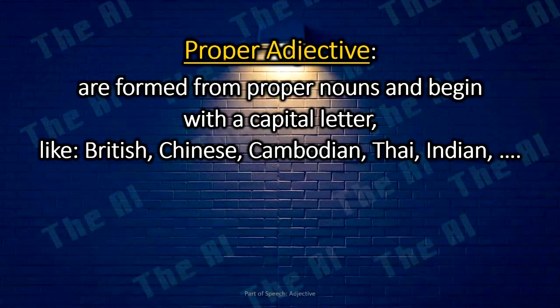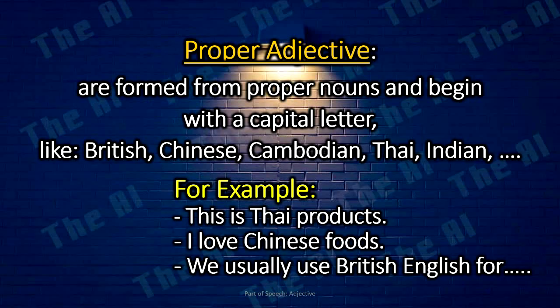Proper adjectives are formed from proper nouns and begin with a capital letter, like British, Chinese, Cambodian, Thai, Indian, etc. For example: This is a Thai product. I love Chinese food. We usually use British English for speaking in this country.